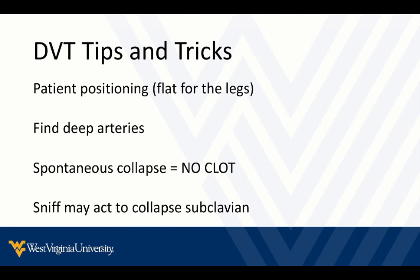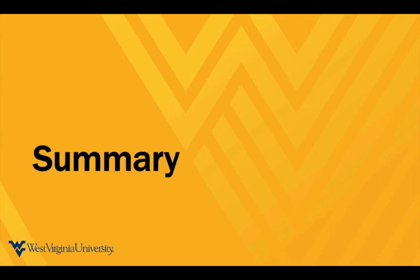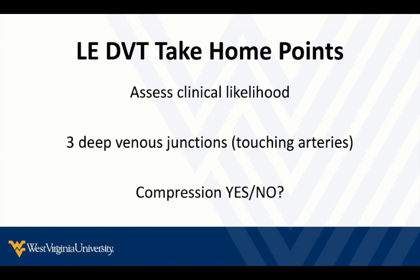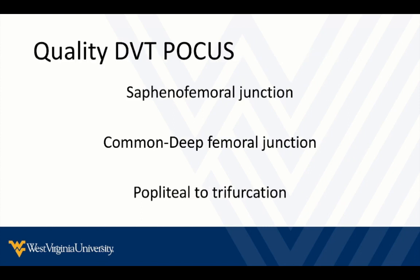Last tips and tricks: when looking at the leg, get the patient as flat as you can — don't have them sitting up at a 90-degree angle. Always find the deep arteries. Remember, if the veins are spontaneously collapsed without hardly any pressure, there's no clot in there. If the subclavian is difficult to image or it's hard to tell if it collapses, have the patient take a quick deep breath or sniff, or sit them upright to demonstrate whether it collapses. You can always compare sides — there are generally two sides for most patients, so if you're not sure, compare and see how it looks different. For quality POCUS of the leg, include the saphenofemoral junction, the common and deep femoral junction, all the way down the thigh, and at the popliteal, slide the probe to see the trifurcation.